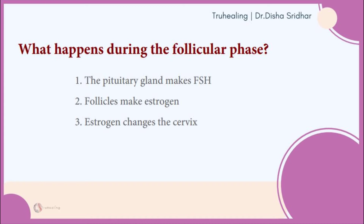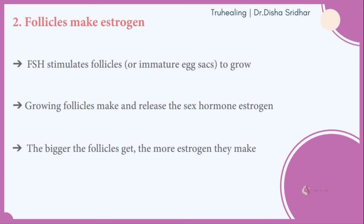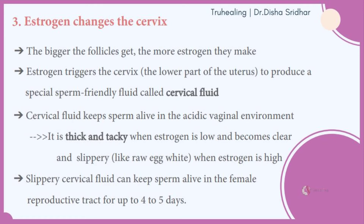Three important events happen in the follicular phase. First, the pituitary gland in the brain makes FSH. FSH acts on the follicle, which then makes estrogen, and estrogen changes the cervix. As the follicle gets bigger, it produces more estrogen, which triggers the cervix — the lower part of the uterus — to produce a special sperm-friendly fluid called cervical fluid. Remember, the vaginal environment is very acidic and kills sperm within hours, so sperms cannot survive there without this cervical fluid.